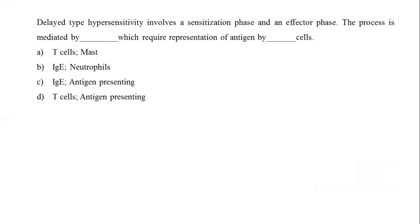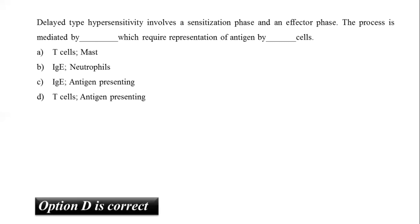Delayed-type hypersensitivity involves a sensitization phase and an effector phase. Delayed hypersensitivity (type 4 or cell-mediated hypersensitivity) is an inflammatory reaction initiated by T lymphocytes and antigen-presenting cells such as macrophages and dendritic cells, causing inflammation to exogenous or autoantigen that takes more than 12 hours to develop. It is accomplished by an initial sensitization phase and a later effector phase leading to tissue damage. The correct answer is option D: T cells and antigen-presenting cells.